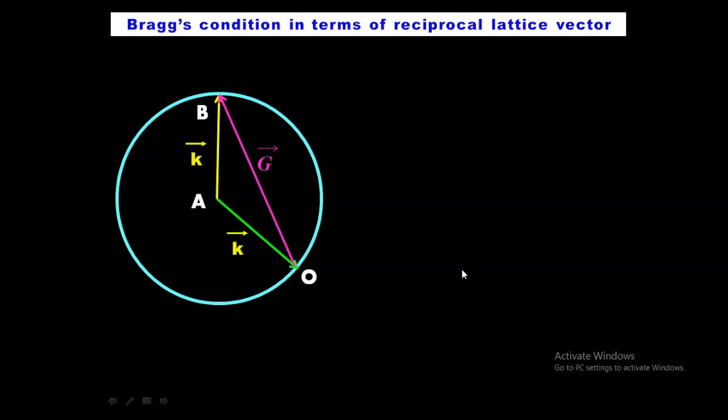Now from the Ewald construction we will derive Bragg's condition in terms of reciprocal lattice vectors. This is the Ewald sphere: this direction is the incident x-ray, and this is the direction of the diffracted x-ray, represented by wave vectors. O is the reference reciprocal lattice point and B is also a reciprocal lattice point; the line joining O and B is the reciprocal lattice vector G.